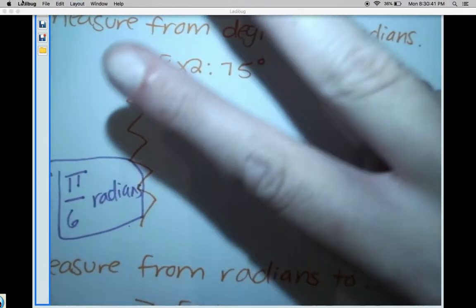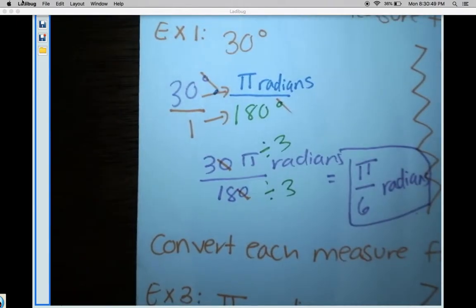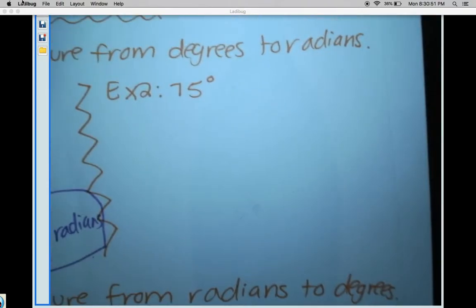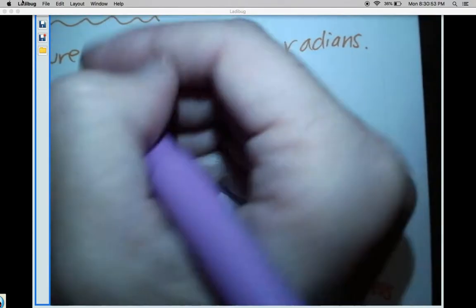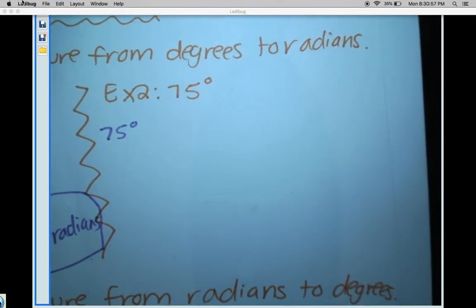All right, time for our second example on how to convert from degrees into radians. We're gonna make this flow very similar to our last one, so let's get going. I'm gonna start with 75 degrees. What do I multiply to degrees to convert that into radians? I multiply...